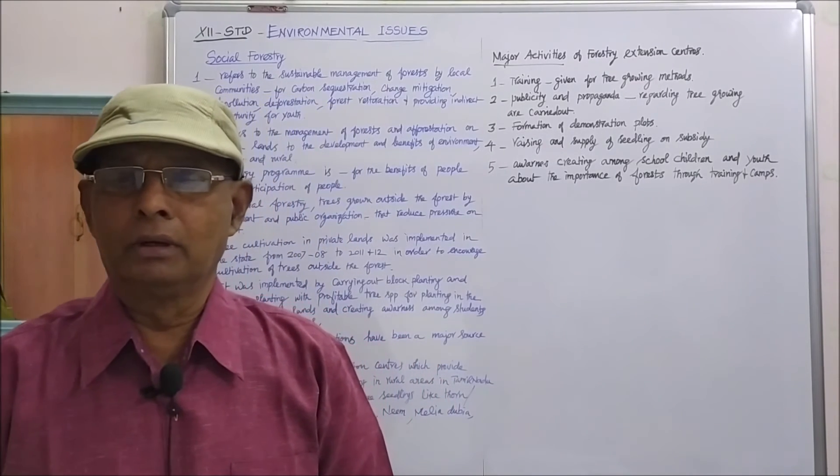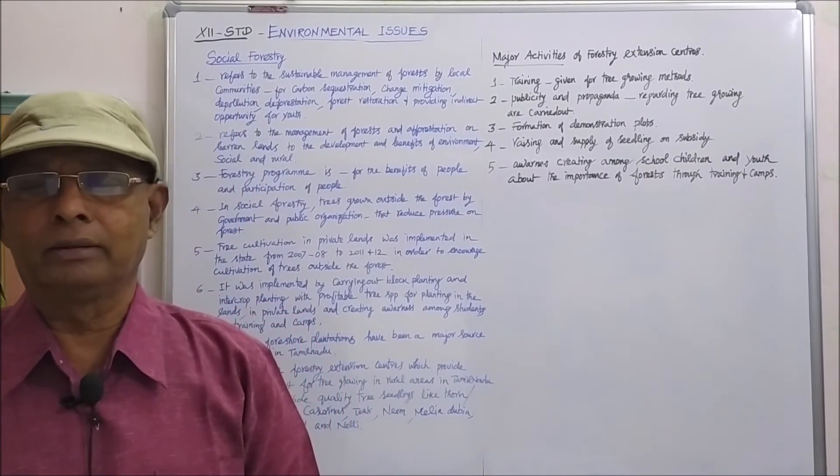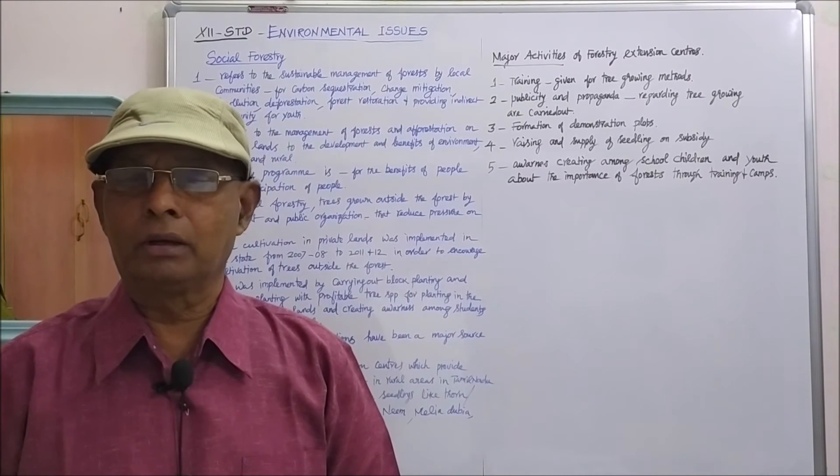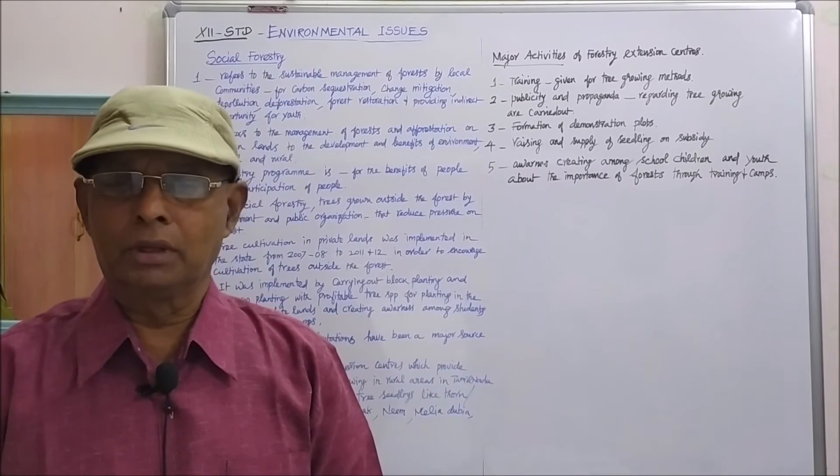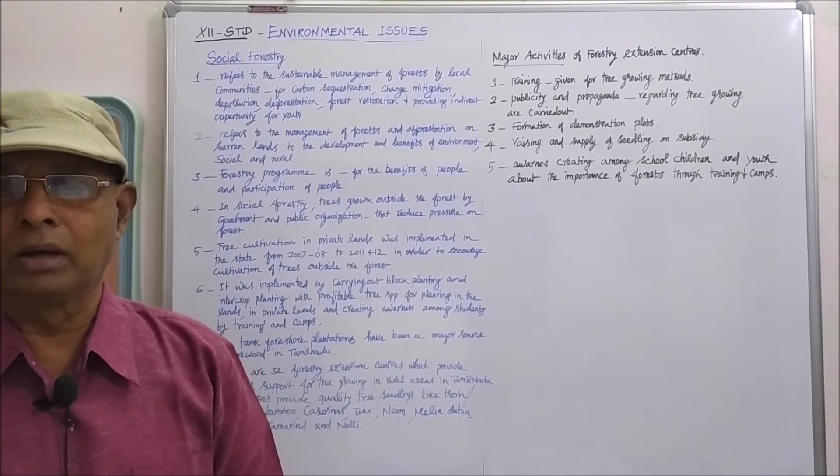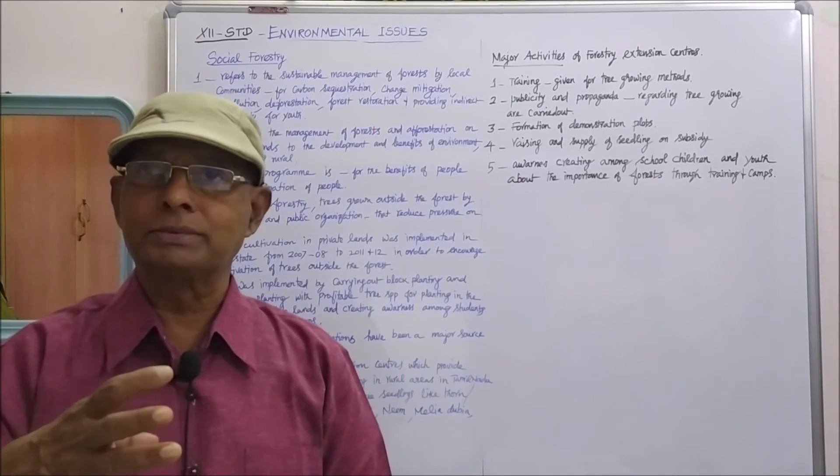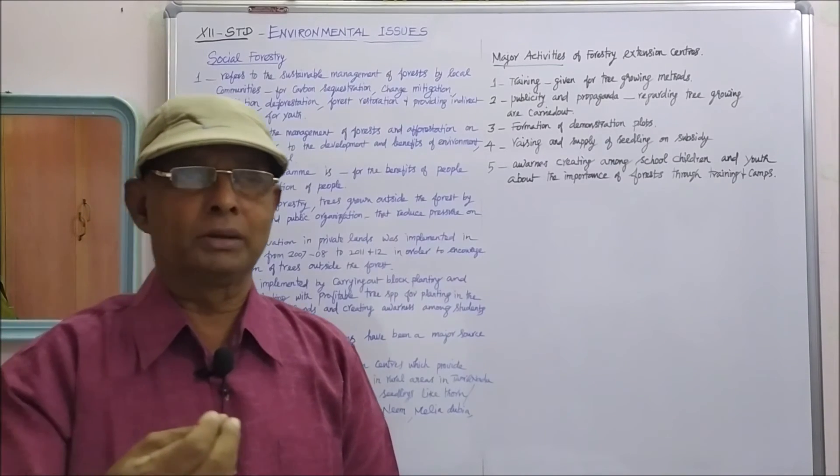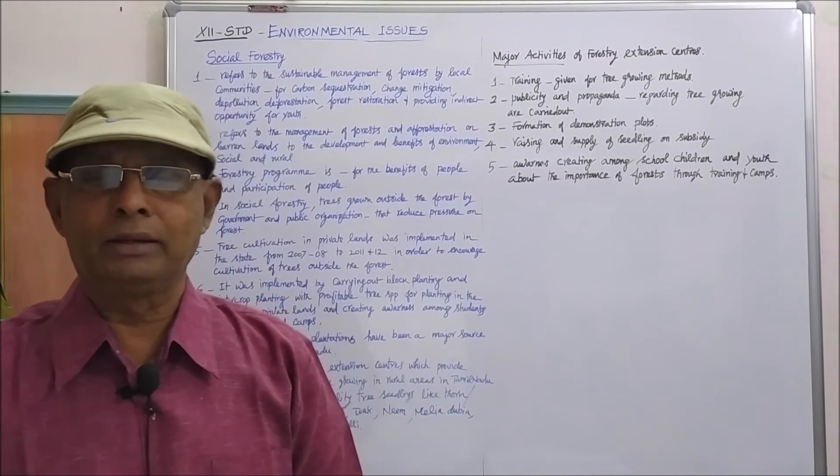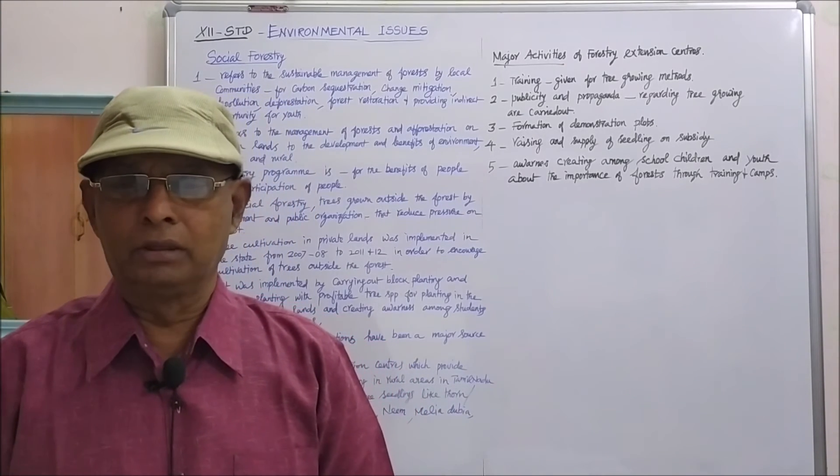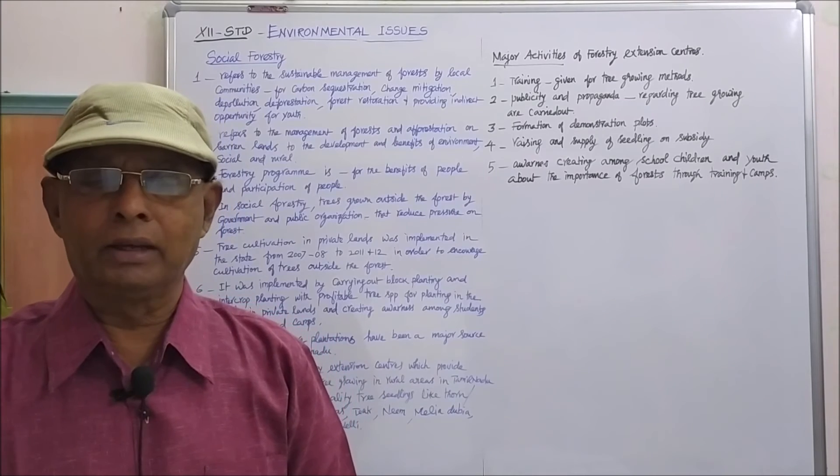It was implemented by carrying out block planting. What is block planting? When the plants are planted in separate areas, space, block or rows rather than the traditional system, that is block planting. And inter-crop planting. Already we have seen the inter-crop planting. In between the main crops, some of the shrubs are cultivated, that is mixed-cropping or inter-cropping or inter-planting or mixed-planting.